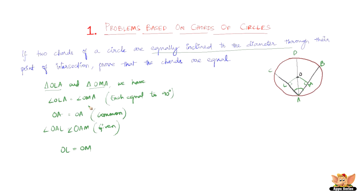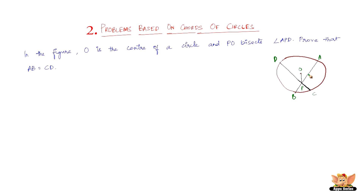Let us solve more problems. The question goes like this: O is the center of a circle and PO bisects angle APD. Prove that AB equals CD. The concept is we need to prove two chords are equal by showing they are equidistant from the center.